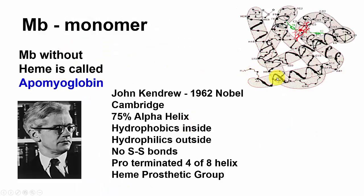Myoglobin is a monomer with only one polypeptide chain. Its structure was first determined by John Kendrew, who won the 1962 Nobel Prize while working at Cambridge. His findings showed myoglobin is 75% alpha helix, has a hydrophobic and hydrophilic side, no disulfide bonds, proline-terminated helical strands (eight total), and heme as the prosthetic group.